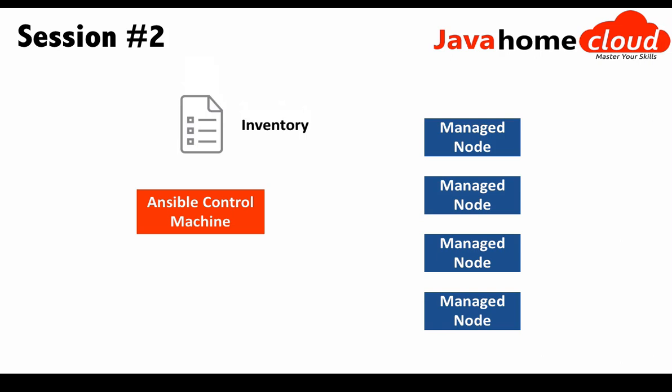The inventory file is a configuration file which contains all the details about managed nodes — its IP or hostname, its username, passwords or the private key location, and the connection type like SSH for Linux flavors or WinRM for Windows. It can also contain variables and many more details.